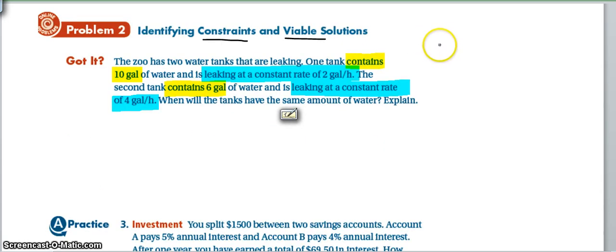So now we have a situation about the zoo, which hopefully you've been to the Columbus Zoo lately because it is pretty awesome. So we have one tank that the water in that tank we can describe as being 10 gallons, but it is leaking, oh no, which that would be losing water at 2 gallons per hour. So our variable there is going to be hour.